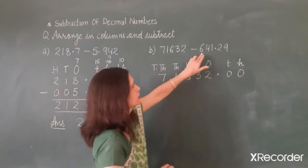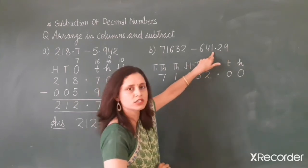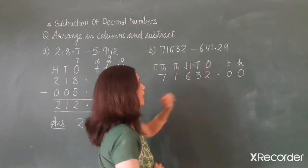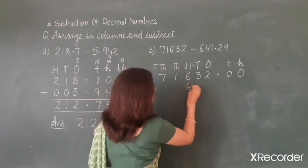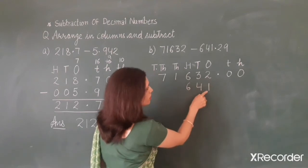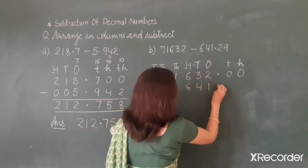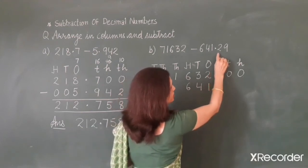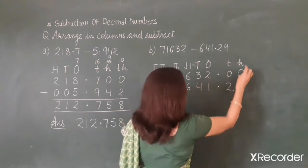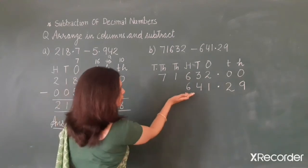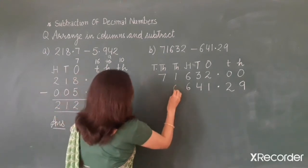Now arrange the next decimal number, 641.29. The whole number part is 641: 1 at 1's place, 4 at 10's place, 6 at 100's place. Put the decimal point. Then digit 2 at the 10ths place and digit 9 at the 100ths place. No value is given at the 1000ths and 10,000ths places, so we write 0's there.